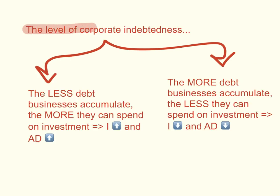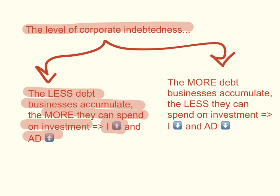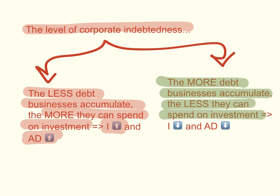The last factor is the level of corporate indebtedness. The less debt that businesses accumulate, the more they can afford to spend on investment, so investment spending will increase and aggregate demand will increase, shifting the curve to the right. The opposite is true: the more debt businesses accumulate, the less they can spend on investment, so aggregate demand will decrease and the curve will shift to the left. This is one of the things that happened during the global financial crisis in 2008 — many businesses suddenly realized they had a lot of debt they couldn't repay, leaving much less available for investment and leading to a big decrease in aggregate demand.